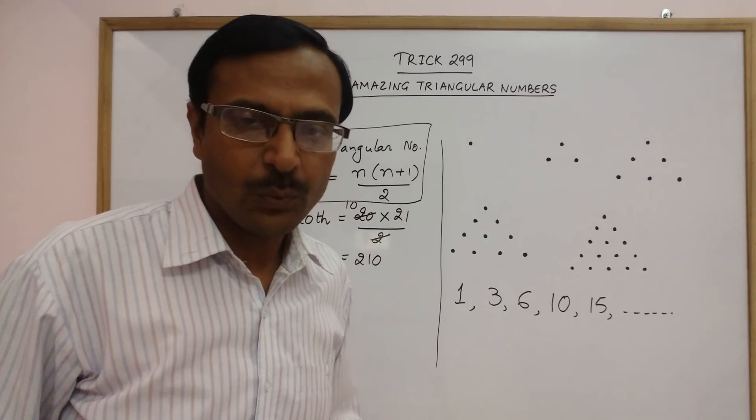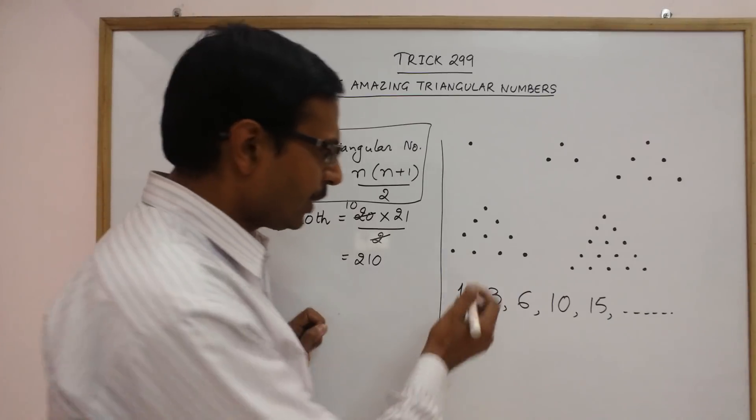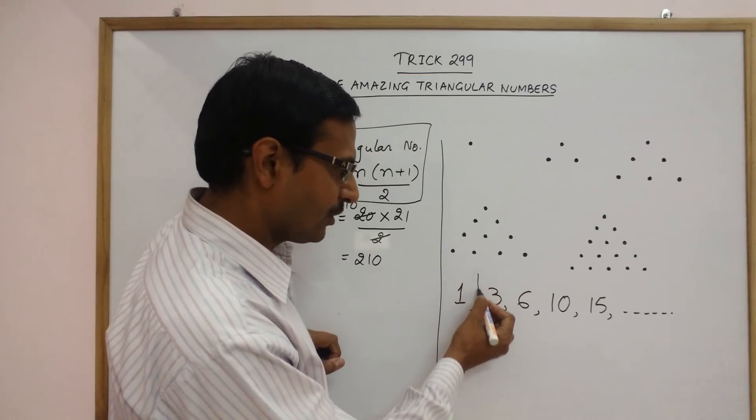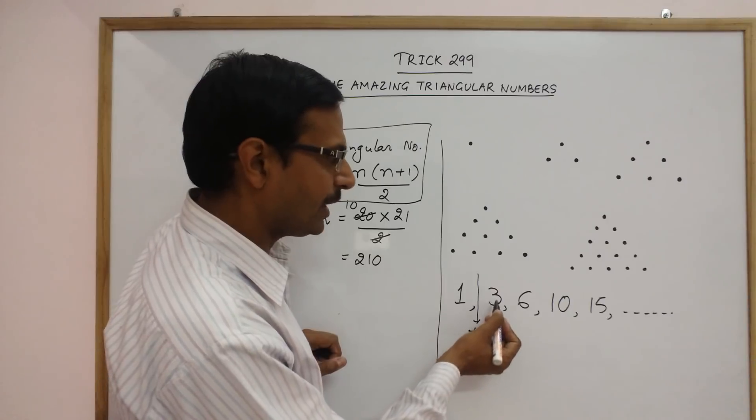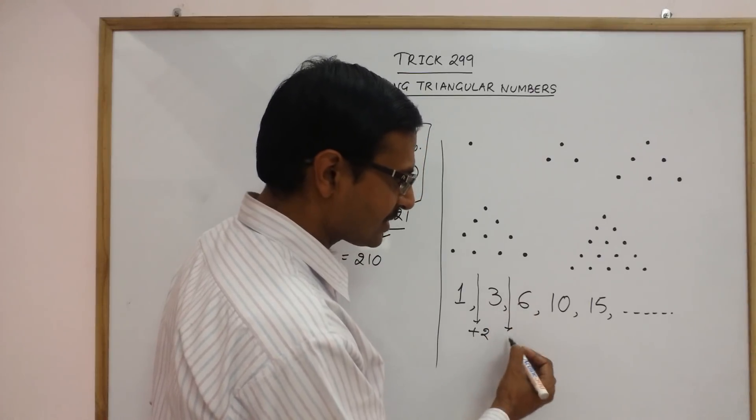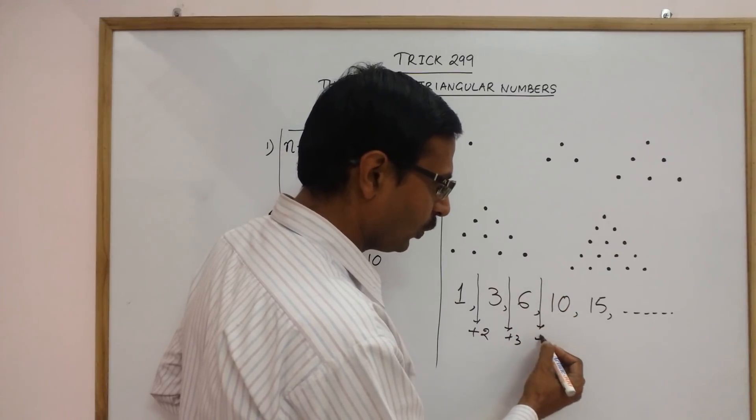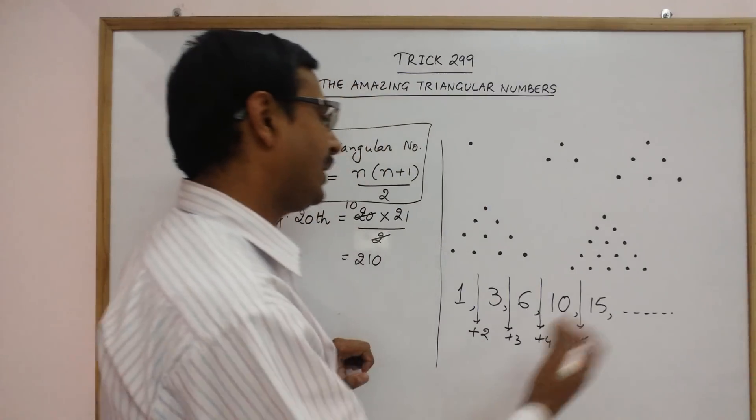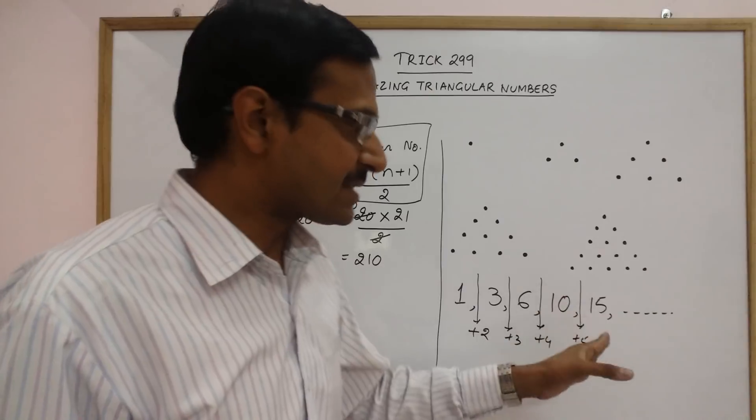Now, after this, we can have one more property. Very, very interesting property. Now, see, how do we obtain the second triangular number from the first? We add 2 to the previous number. We obtain the second triangular number. Then, 3 plus 3 gives 6. So, add 3. 6 plus 4 gives 10. So, add 4. 10 plus 5 gives 15. So, add 5. Now, you can just see the pattern which we are following to find the next triangular number.